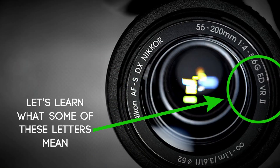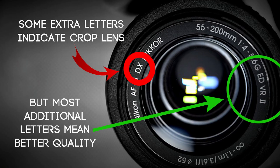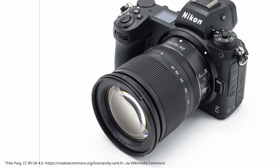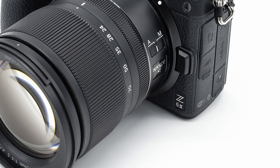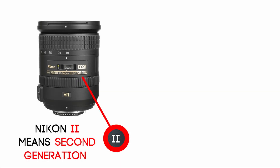Now on to some other markings. As a general rule, additional letters usually mean a better lens. However, not if those letters indicate a crop sensor lens — for example, Nikon DX indicates a lens for a crop sensor camera. Some lenses and camera bodies might also have Roman numerals like 2 and 3 to indicate the generation of the camera body or lens. A lens with a 3 is newer and probably has some upgrades compared to the same lens at generation 2. Be aware that some manufacturers may use similar markings for other purposes.